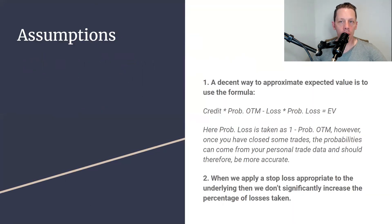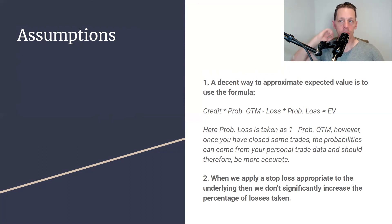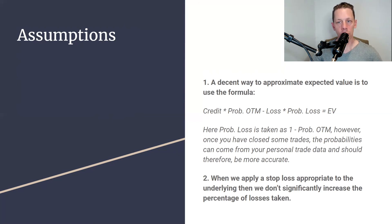There are a couple of assumptions baked into this example. One is that the formula we use is an acceptable way to calculate the expected value shown here. The second is that you're able to cut off the loss without significantly impacting the probability of the short strike going in the money. Many options trades actually start off with a negative expected value, so operating these trades within the rules of the system is critical to survival.